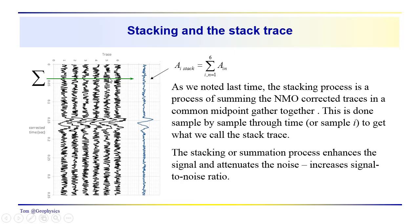A fold refers to the number of traces in the gather. We've summed them all together so we get this stack trace, and you can see the noise has been attenuated and the signal comes through much more pronounced. But there is still some noise left. This random noise doesn't cancel out when we sum across the traces.